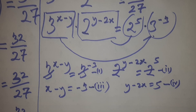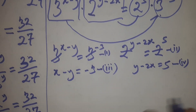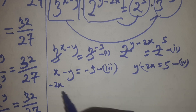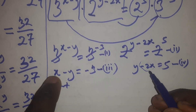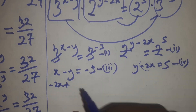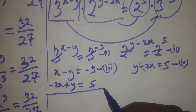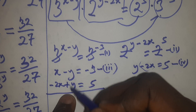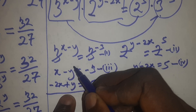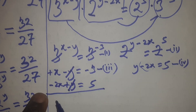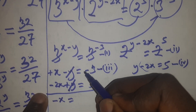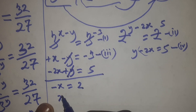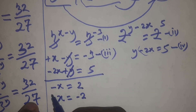Using the elimination method, I rewrite equation 4 as minus 2x plus y equals 5, aligning it under equation 3. Subtracting, the y values cancel out. I'm left with x minus 2x, giving minus x equals minus 3 plus 5, which is 2. Dividing both sides by minus 1, I get x equals minus 2.